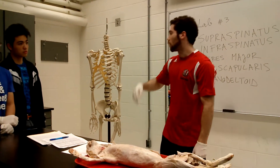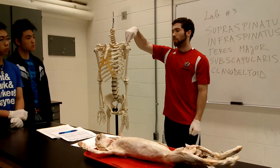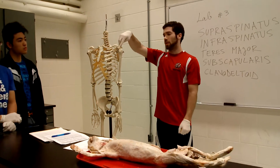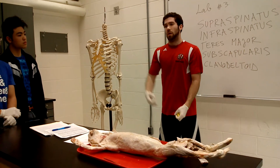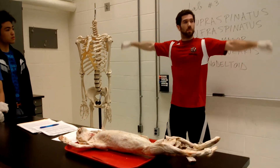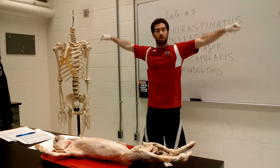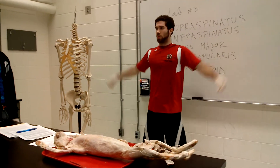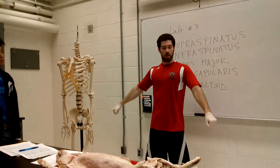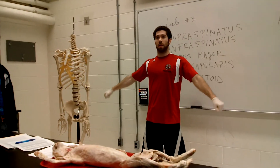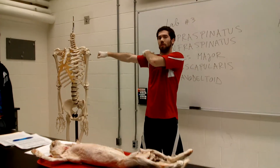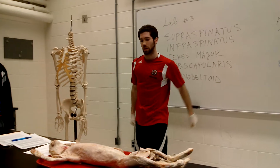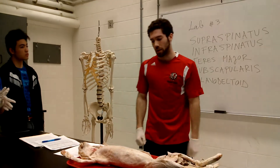Acromio deltoid comes from the acromion process and inserts at the same deltoid tuberosity. This is the main abductor of the shoulder: supraspinatus kicks off abduction, and then once you get into the fuller range of motion, acromio deltoid takes over.